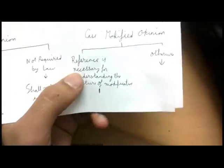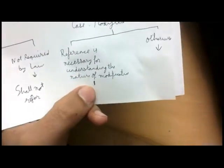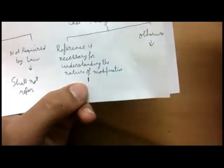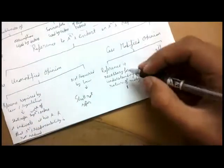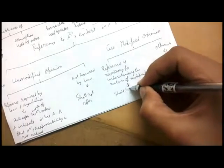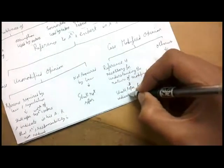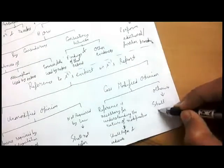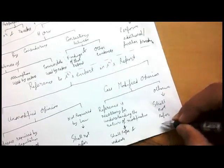If the auditor gives a modified opinion, reference to the auditor's expert should be included if it is necessary for understanding the nature of the modification. In that case, the auditor shall refer to the expert's work and again indicate that his responsibility as auditor for the audit opinion is not reduced. If the reference is not necessary for understanding the modification, he shall not refer to the work of the auditor's expert. This concludes ISA 620 and the entire ISA 600 series.